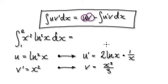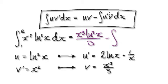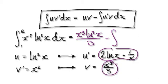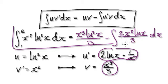Blindly follow the integration by parts formula: u times v minus the integral of u prime times v. So u times v gives us x³ ln²(x) / 3, then minus the integral of u prime times v. The x in the denominator of u prime cancels with one of the x's on top, giving us (2/3) x² ln(x) dx.